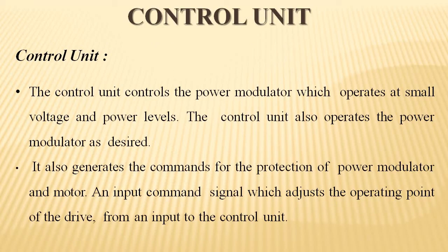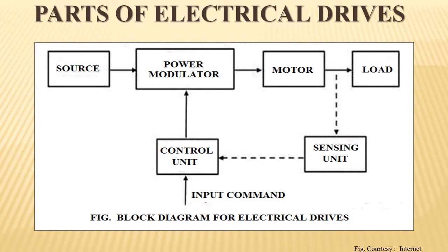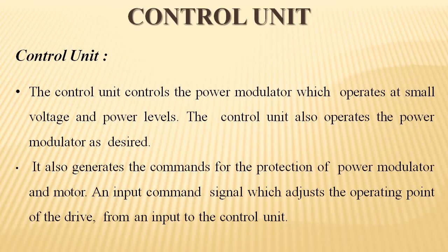Next is the control unit. In the block diagram, the control unit has inputs from the sensing unit and an input command, and it gives input to the power modulator. The control unit controls the power modulator, which operates at small voltage and power levels. It also generates commands for the protection of the power modulator and motor, and the input command signal adjusts the operating point of the drive.